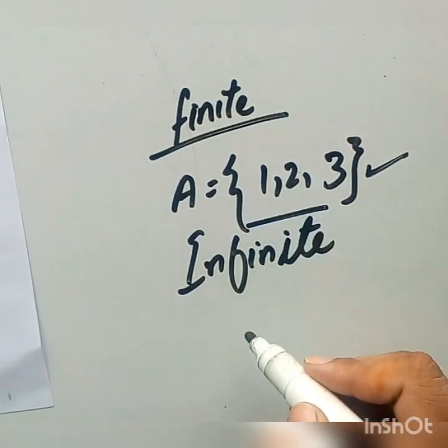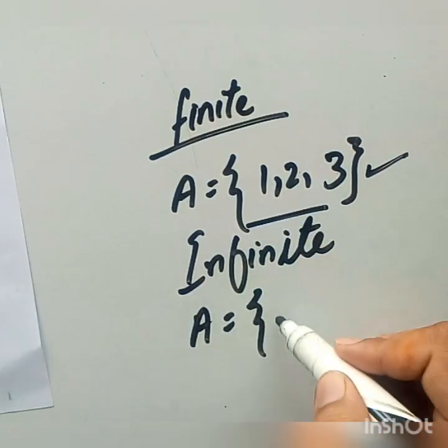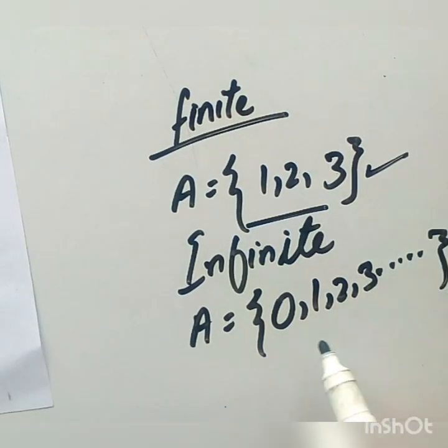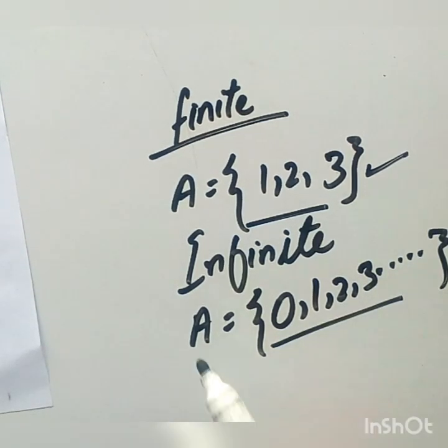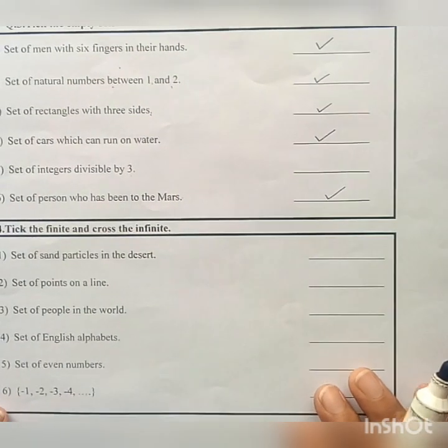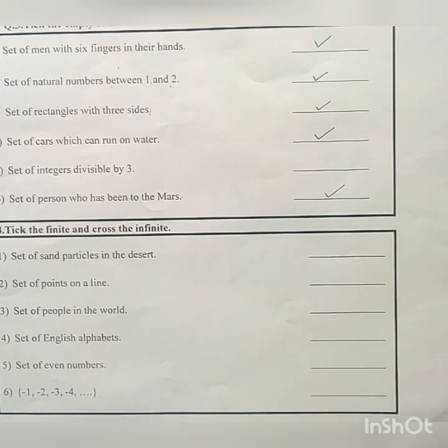Next is infinite. Any set that has infinite number of elements, that is {0, 1, 2, 3...} up to so on. So we cannot say how many elements a set A has. So it is an infinite set. Here we will have to tick the finite and cross the infinite sets.